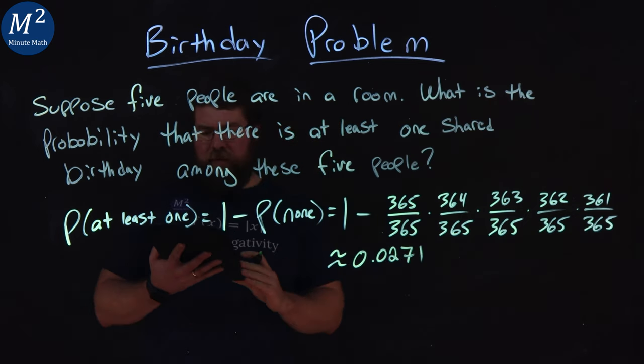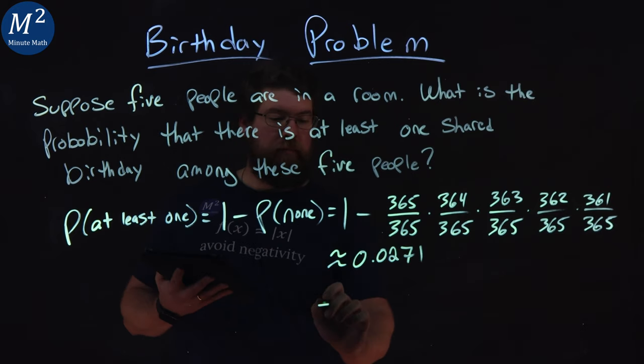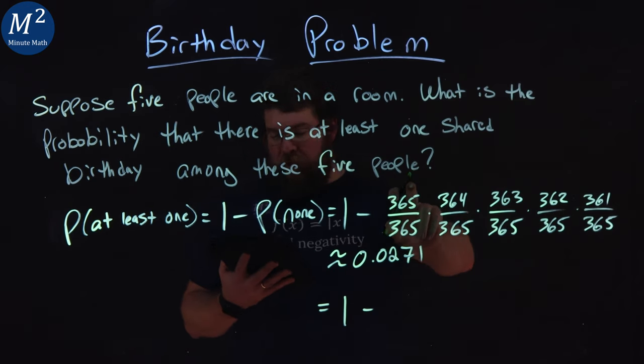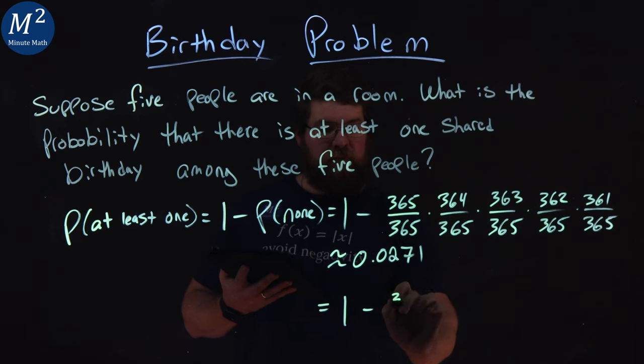But we can also write this more compactly. So we have one minus, there's 365 days, and we're choosing five of them. 365.